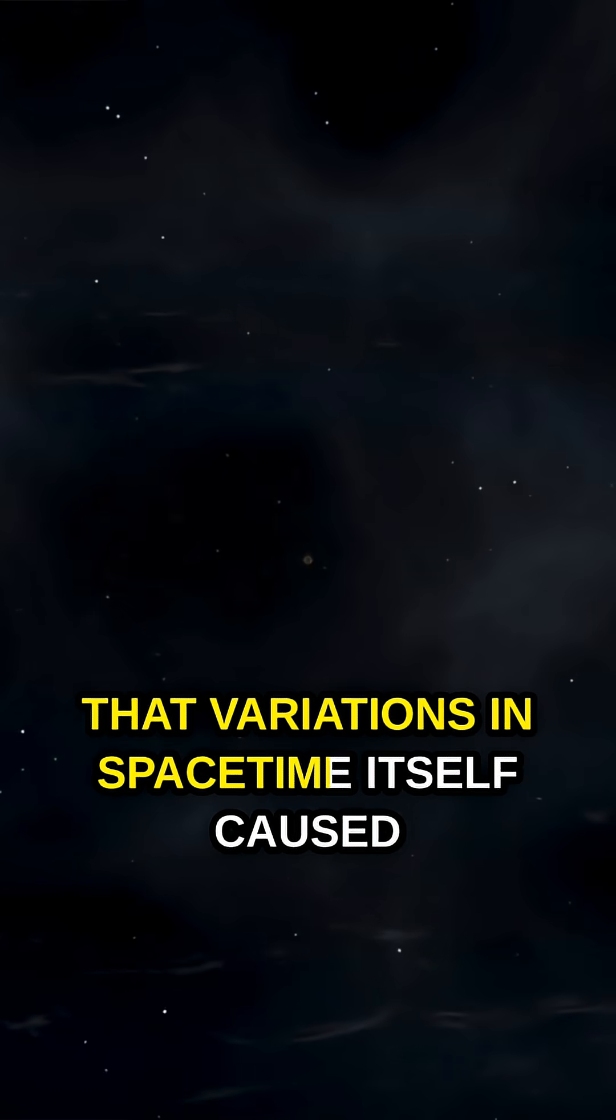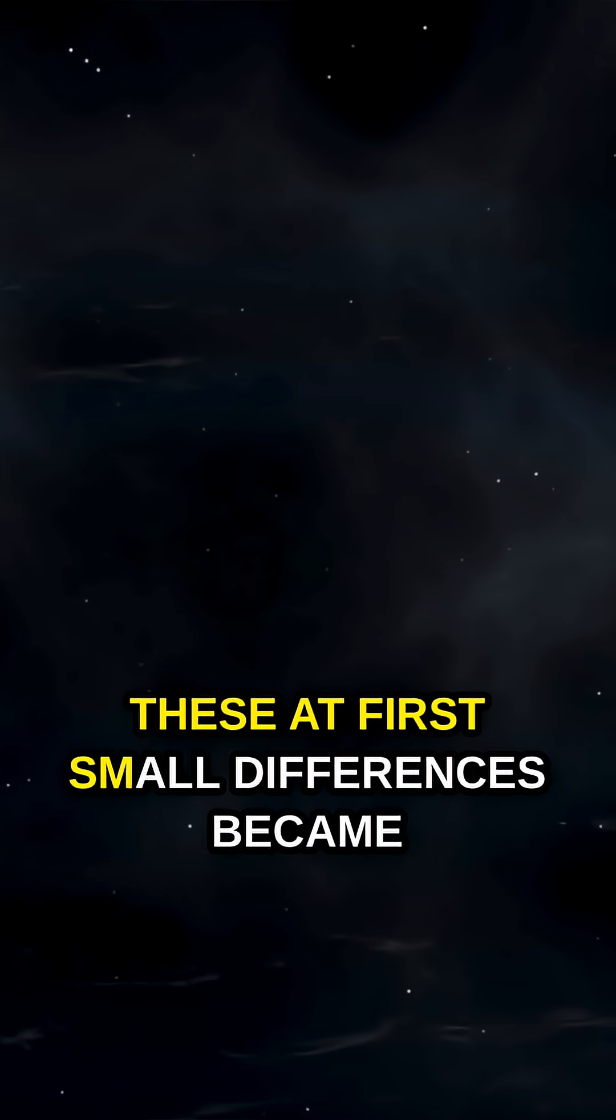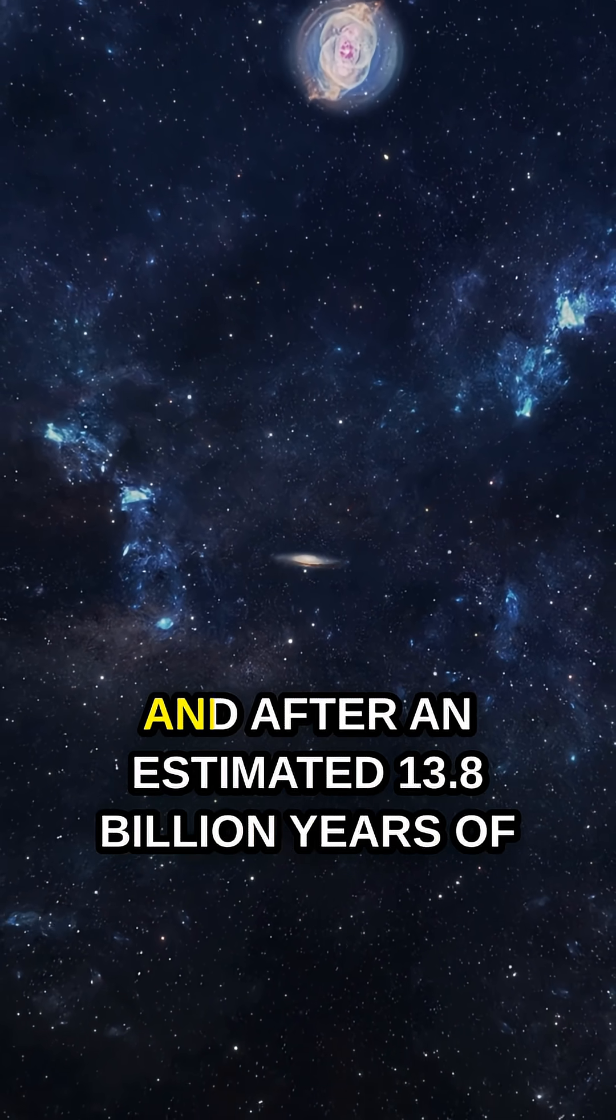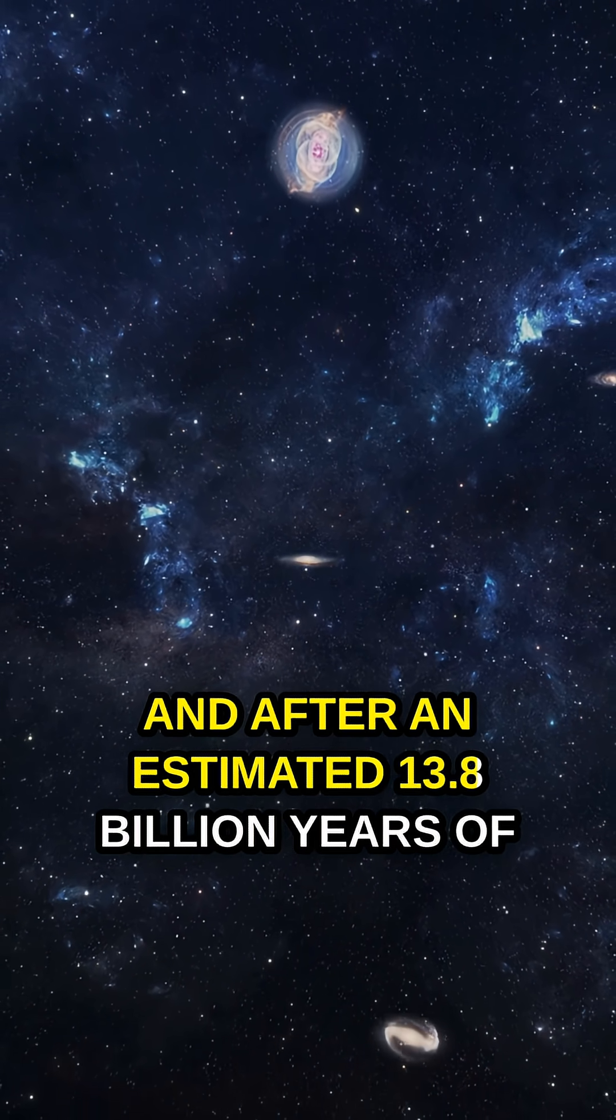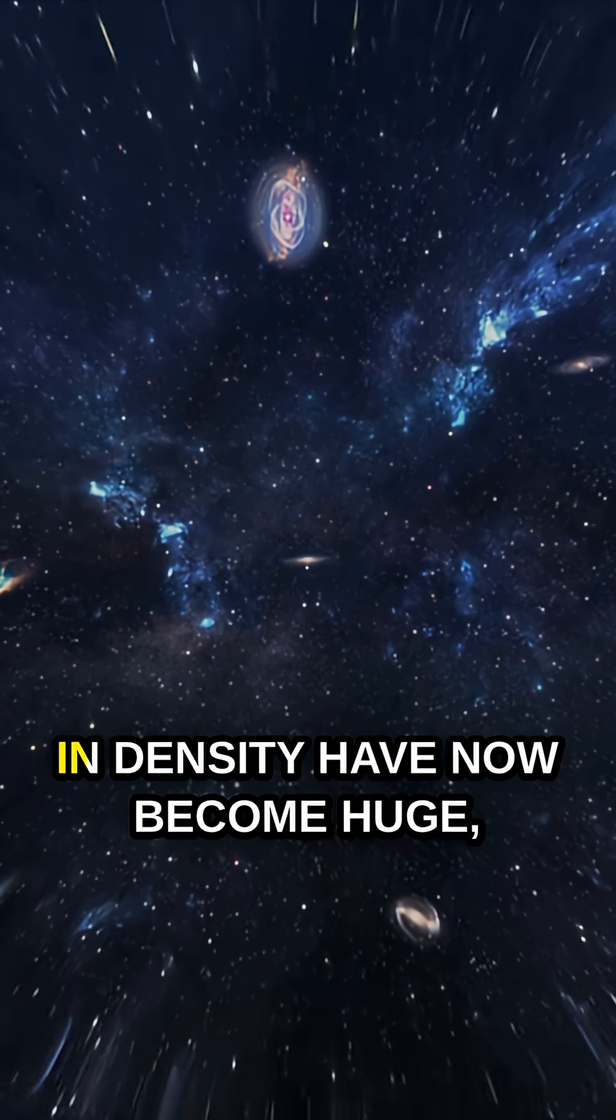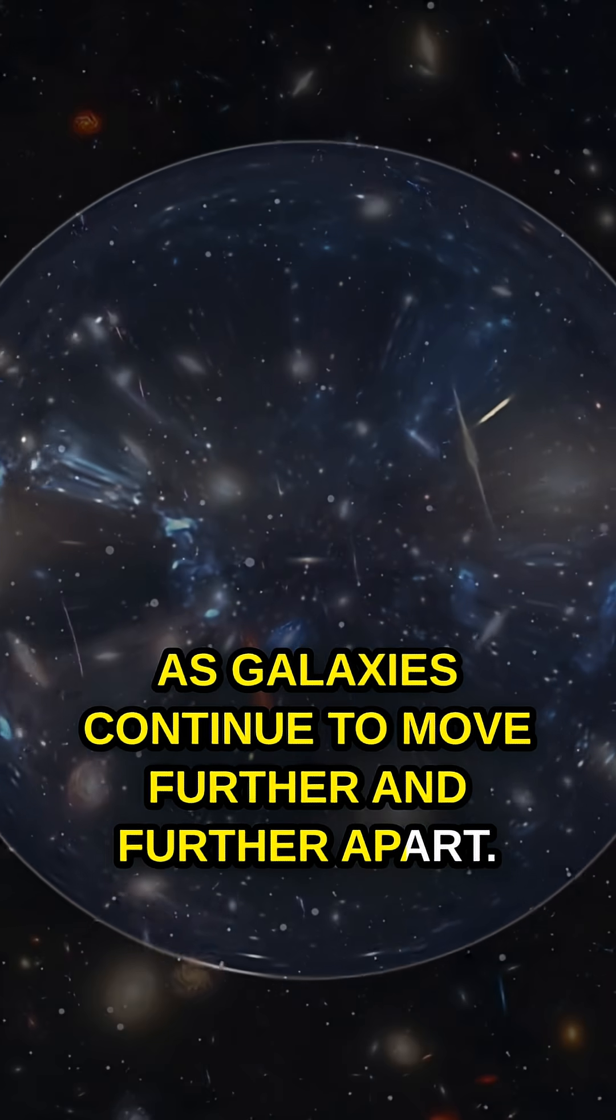Variations in space-time itself caused differences in density of matter. These at first small differences became larger and larger as space expanded, and after an estimated 13.8 billion years of space expanding, some of those once small voids in density have now become huge, as galaxies continue to move further and further apart.